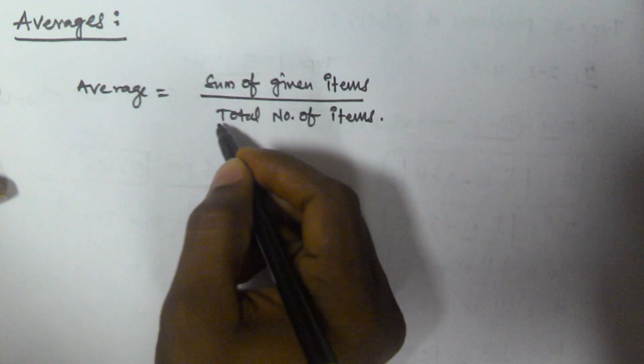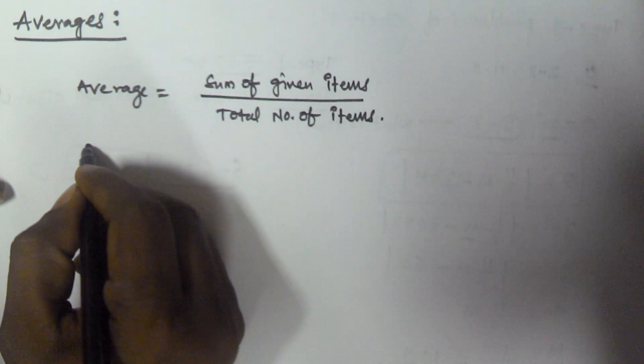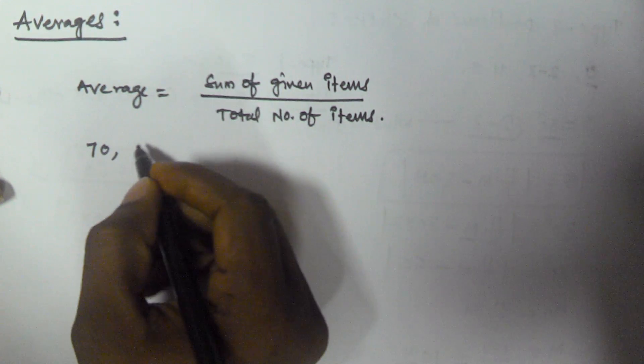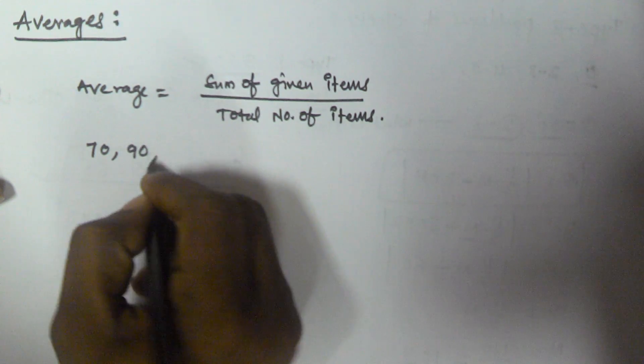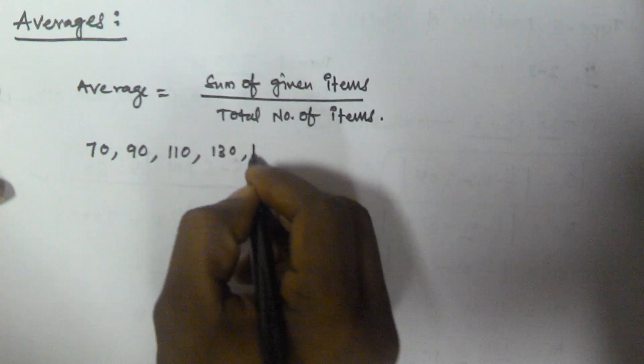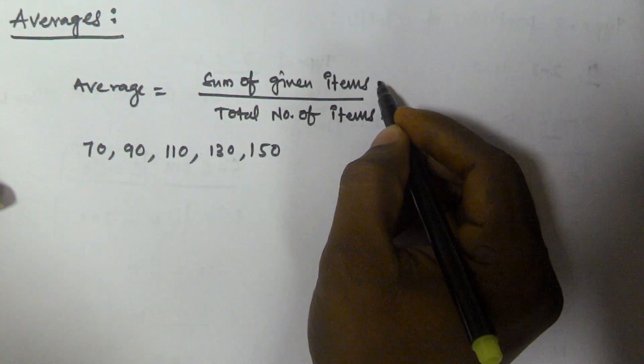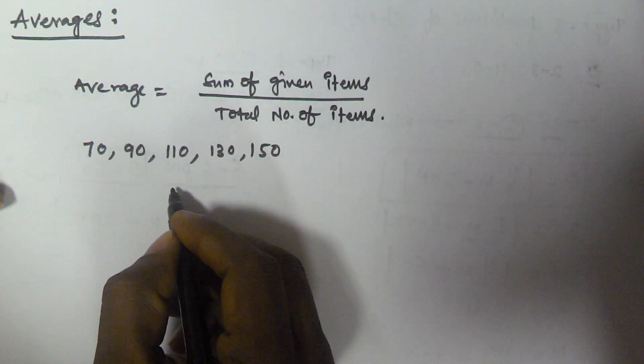Let's see an example. Let's find the average of 70, 90, 110, 130, and 150. Now we have to find the sum of the given items.